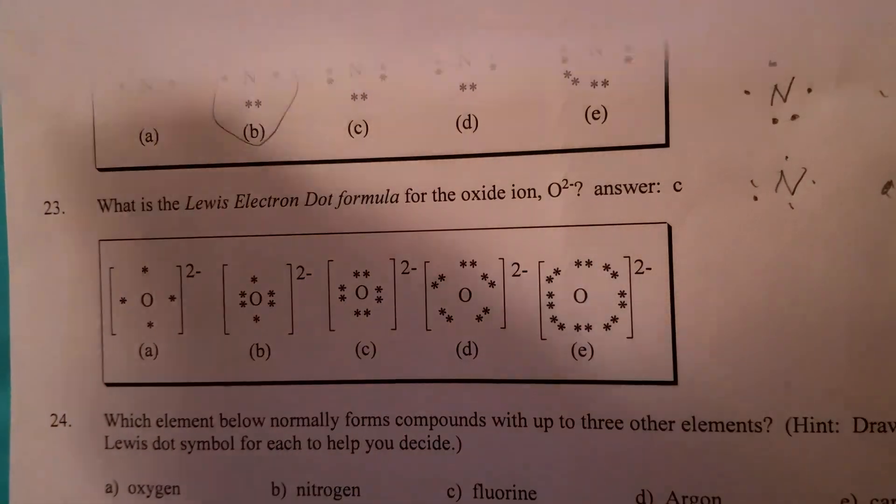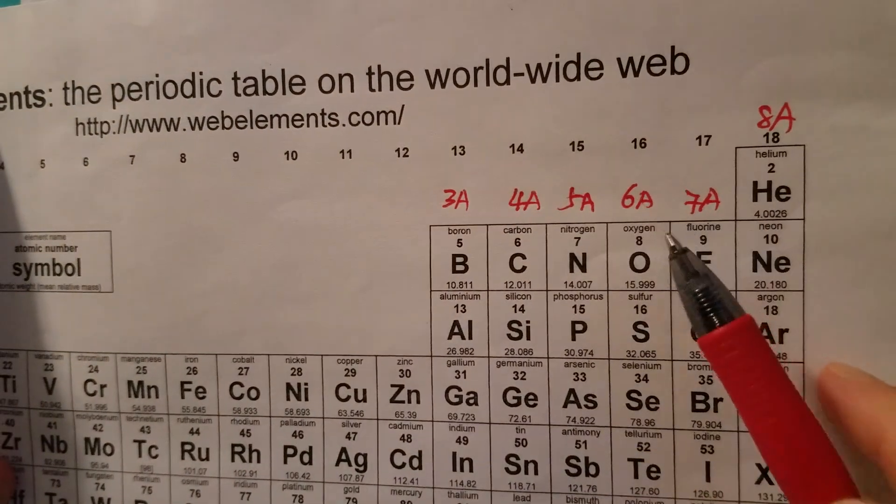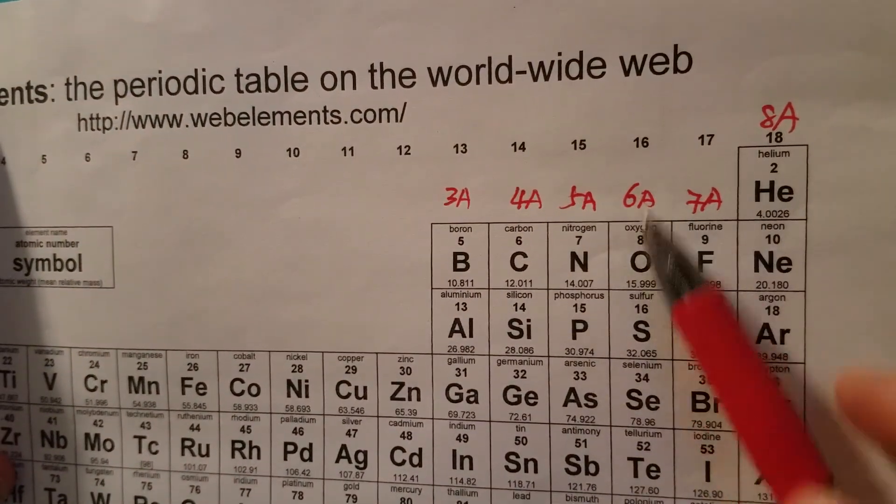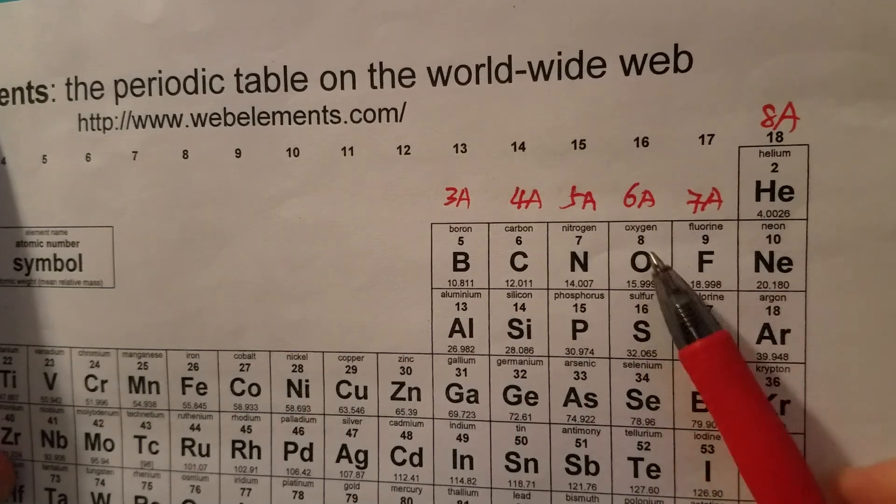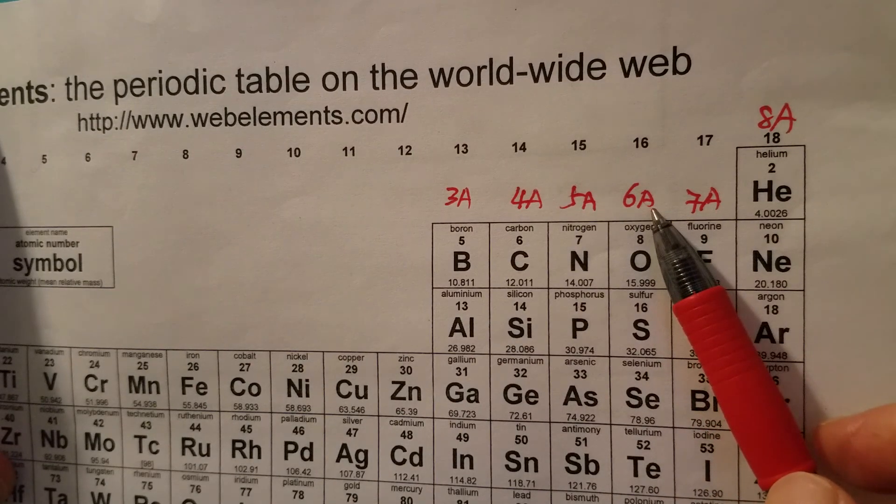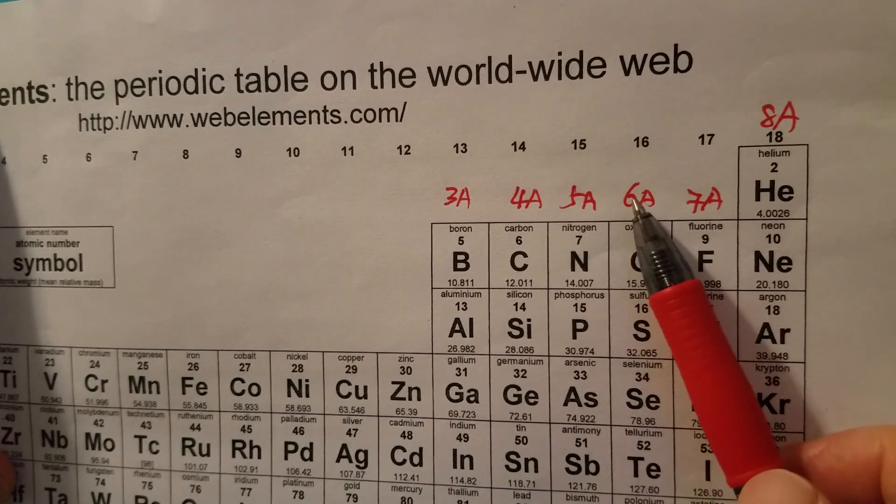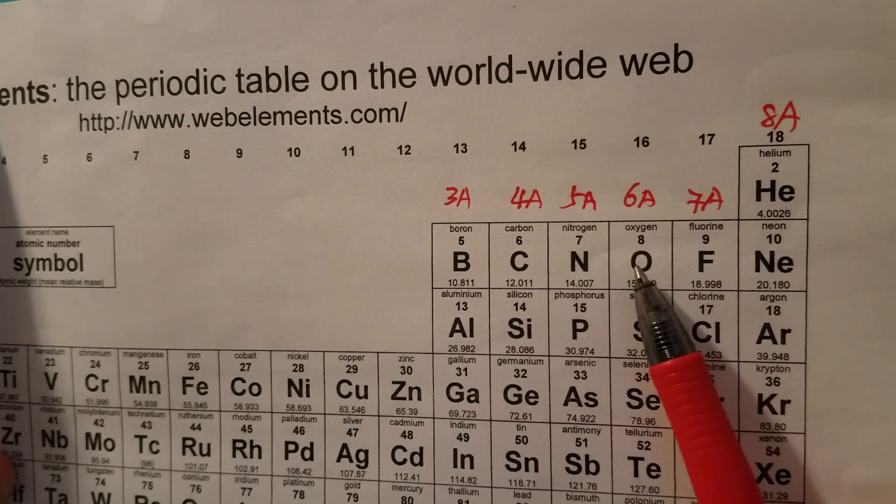So first let's find out the number of valence electrons for oxygen atom. It's in group 6A, so therefore the number of valence electrons equals the group number or family number, so that should be 6 electrons for oxygen atom.